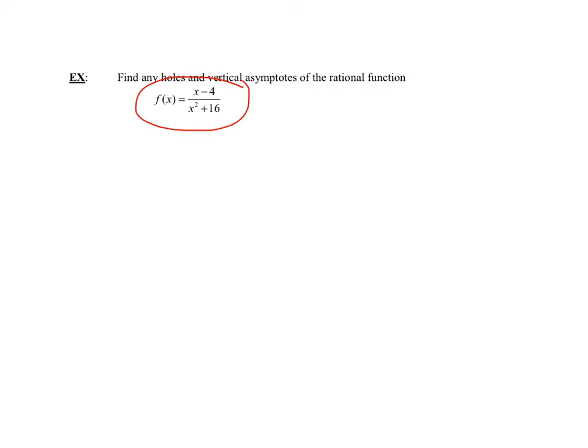Now let's look at the third example. I have another rational function — a polynomial over a polynomial. The numerator is already factored. Can I factor the denominator? Be really careful: this is the sum of two squares. The sum of two squares does not factor over the integers. So I cannot have any factor that totally reduces out of the denominator, which means I have no holes.